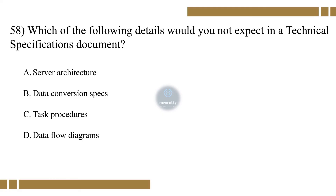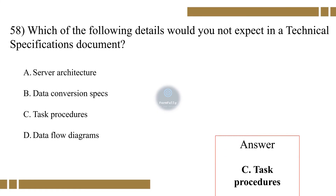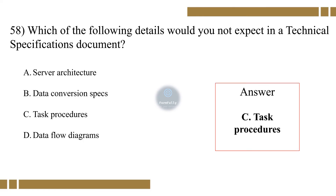Question 58. Which of the following details would you not expect in a technical specification document? Option A: Server architecture. Option B: Data conversion specs. Option C: Task procedures. Option D: Data flow diagrams. The correct option is C, task procedures.